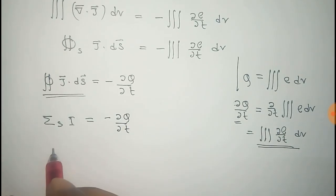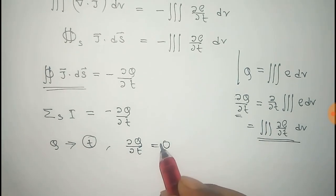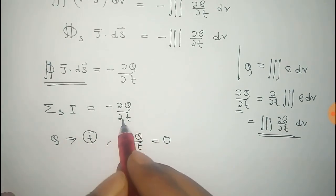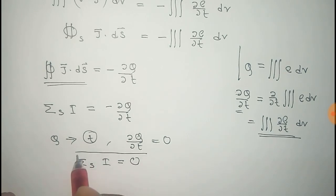Now, if you consider that the total charge Q changes negligibly with time, then you can say that del Q del T is equal to zero. From this we get that sum over S, I, is equal to zero. Thus we get the Kirchhoff's current law, sum over S, I equals zero.